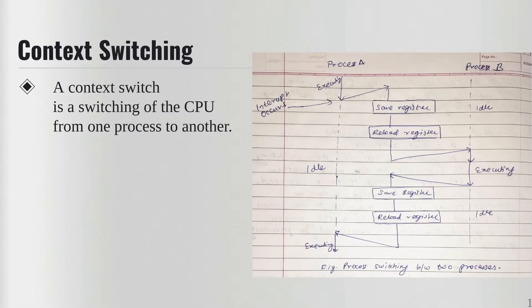Let's say there's a process that is being executed. In context switching, when an interrupt occurs, the CPU is assigned to the process that caused the interrupt. Once that process is completed, the CPU is reassigned back to the previous process.